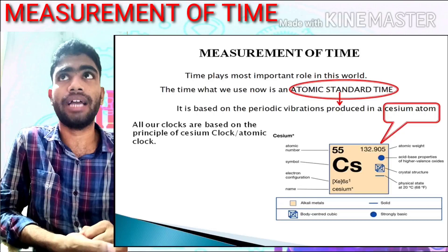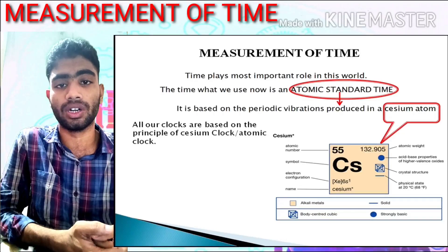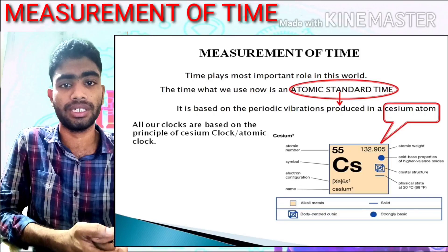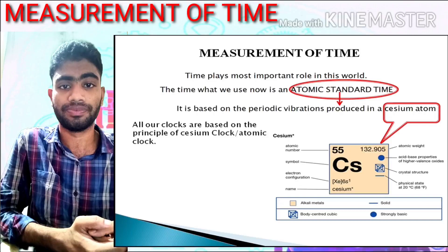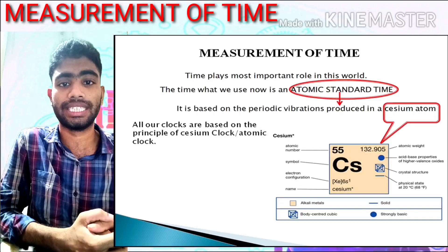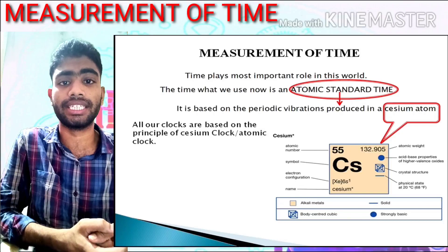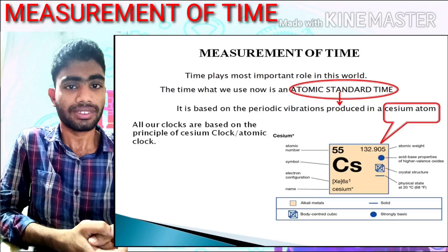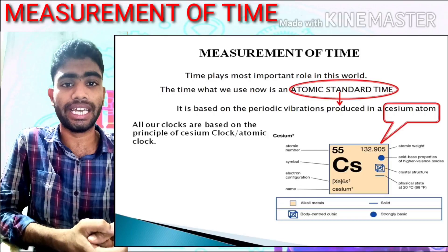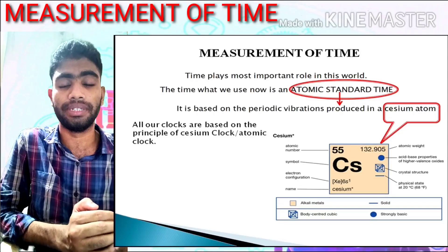The different clocks we use nowadays for the measurement of time are all basically dependent on the principle of the cesium atom's vibration — you can say the cesium clock, or the atomic clock. So it is basically derived from the cesium clock, the atomic clock.